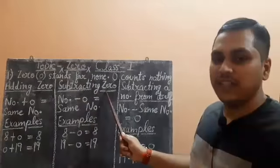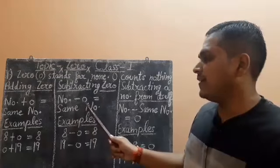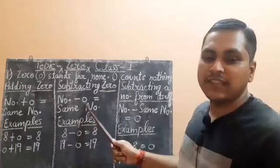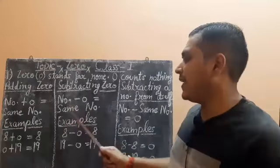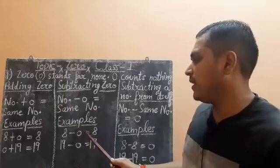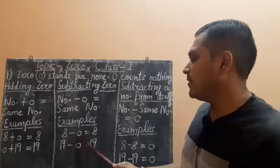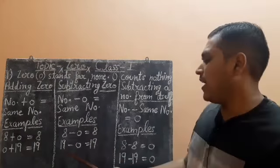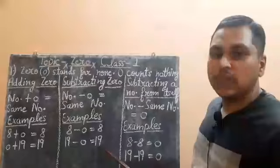Now when you are subtracting zero, that is number minus zero. Whenever you are subtracting zero from a number, you will get the same number. Let us see some examples. 8 minus 0 is 8 and 19 minus 0 is also 19.